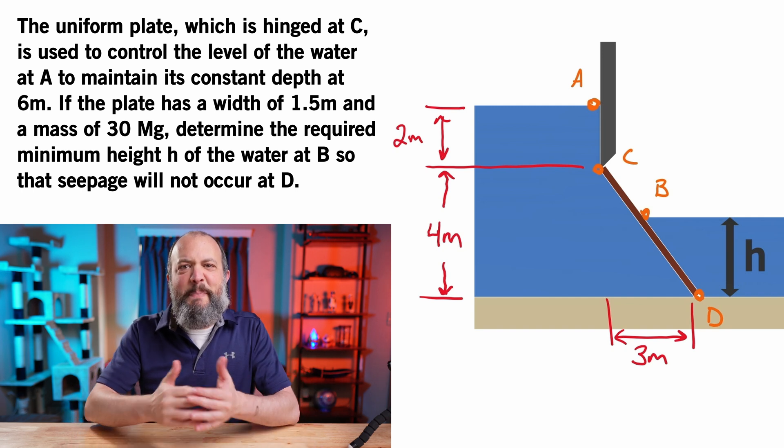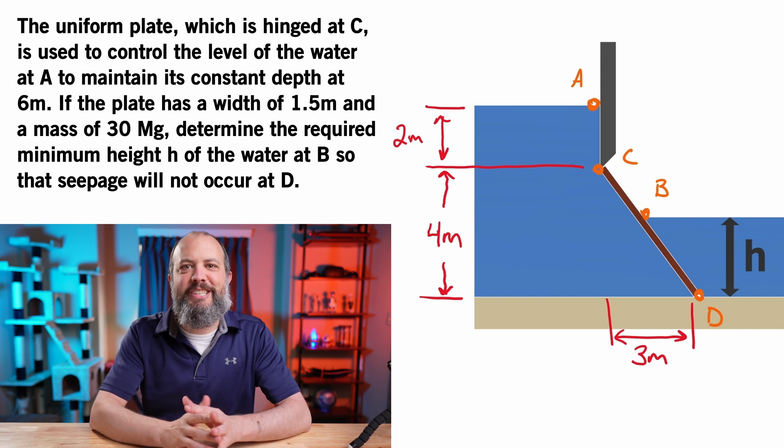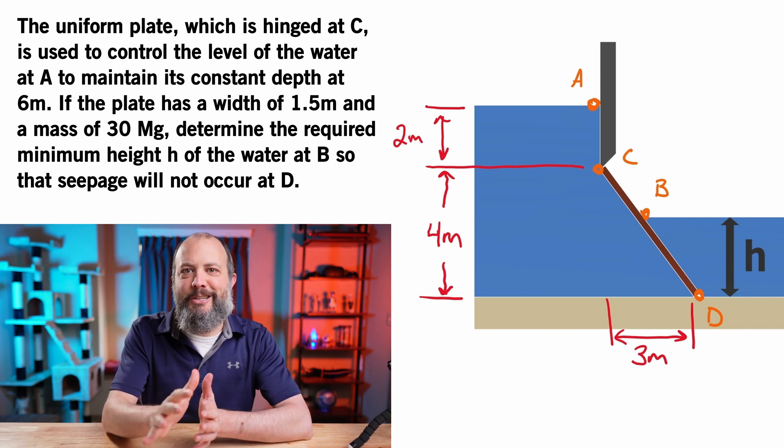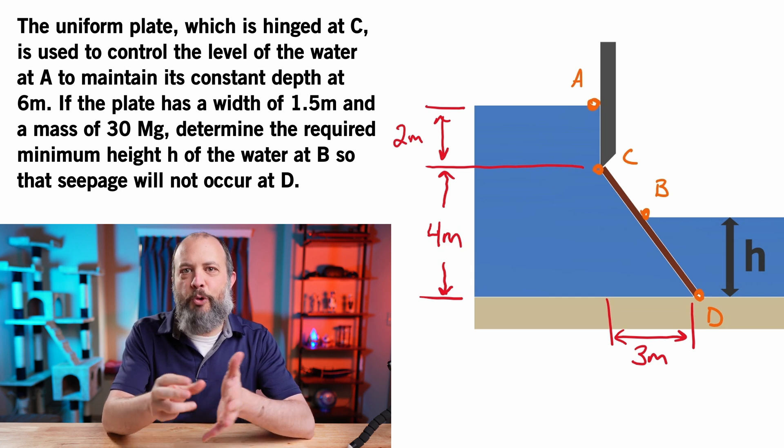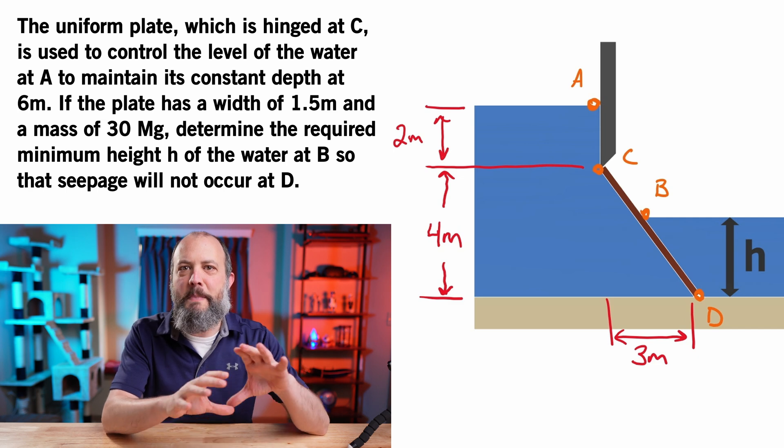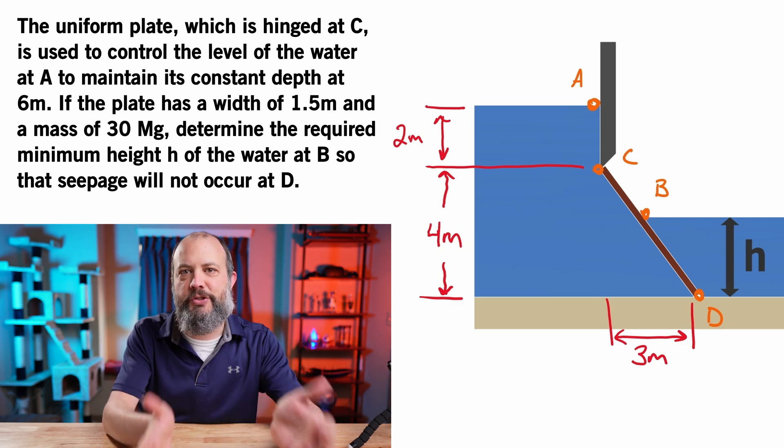I would categorize this as a medium difficulty hydrostatic force on a planar surface example problem. Looking from the left, we have a submerged gate which is able to swing and rotate about pivot point C and is being acted on by a four meter height of water that's a further two meters away from the surface.